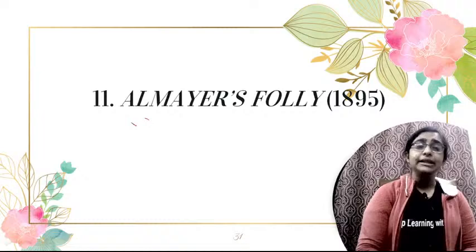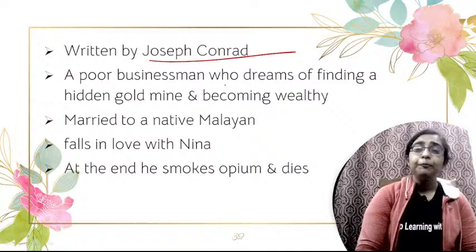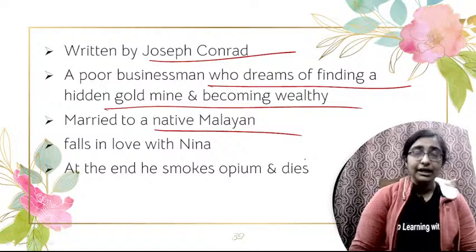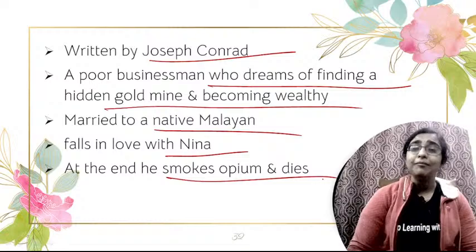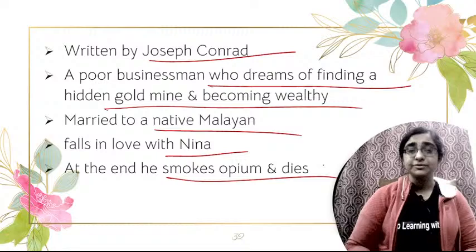Next is Almayer's Folly, published in 1895, the debut novel of Joseph Conrad. It is about a poor businessman who dreams of finding a hidden gold mine and becoming very wealthy. He is married to a native Malayan and falls in love with Nina. At the end, he smokes opium and dies. This is not a very important novel of Conrad, but as a debut novel it is significant.